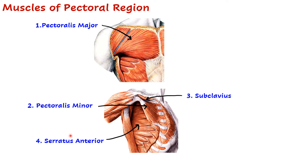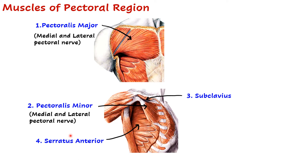Both pectoralis major as well as minor are supplied by medial and lateral pectoral nerves, which arise from the medial and lateral cords of the brachial plexus respectively. The third muscle, subclavius, is supplied by the nerve to subclavius, which arises from the upper trunk of the brachial plexus.